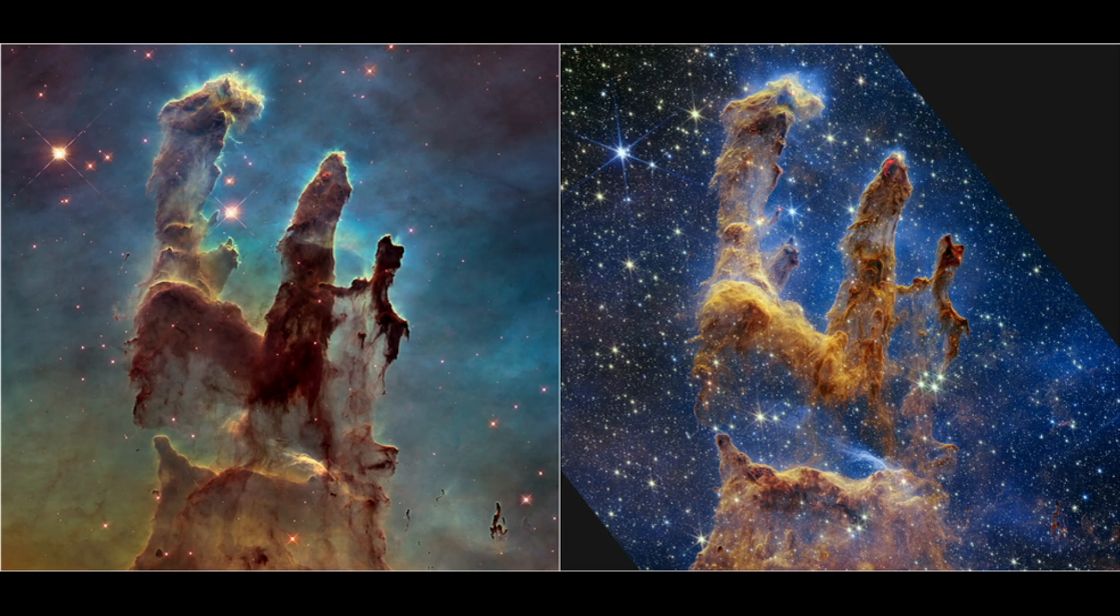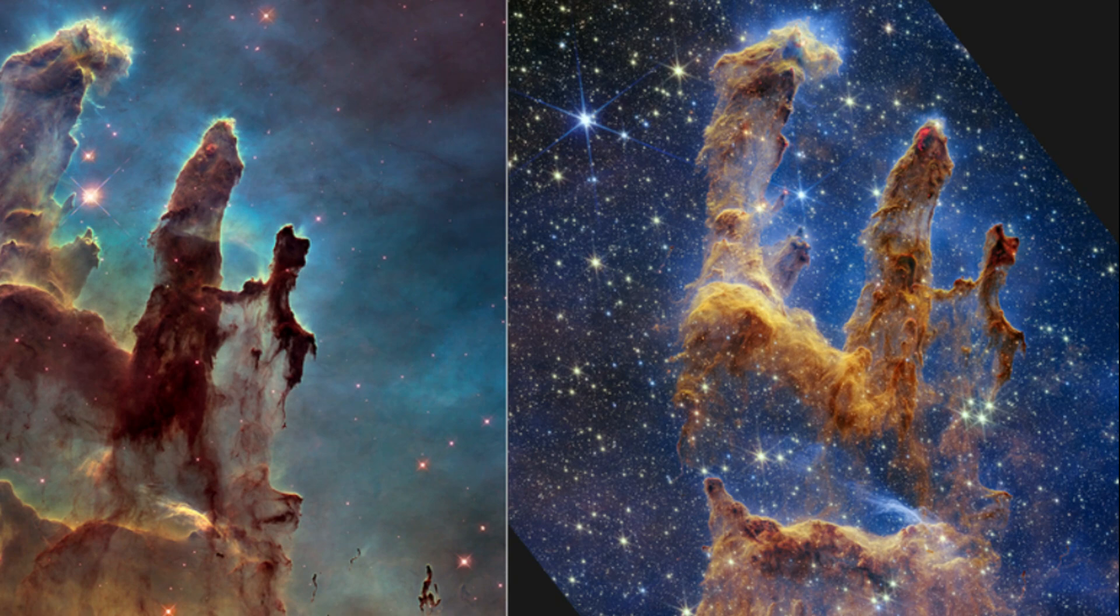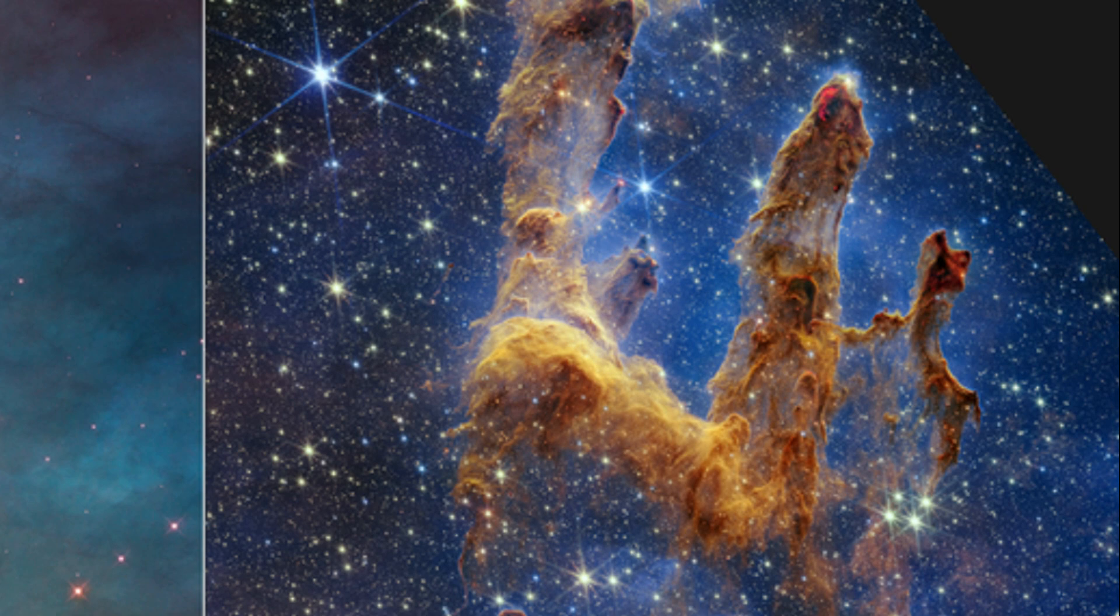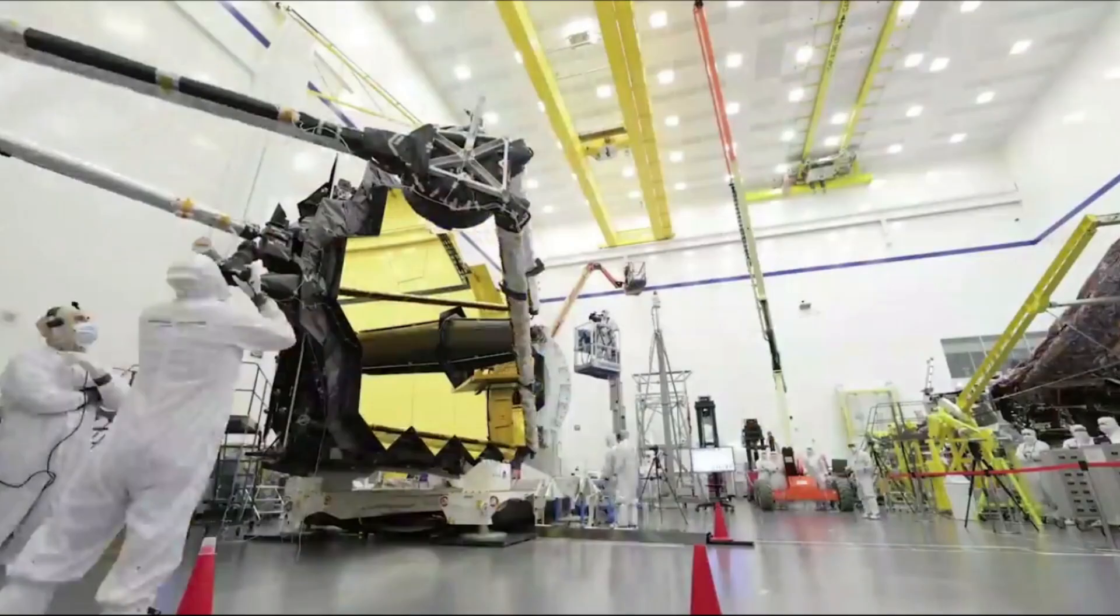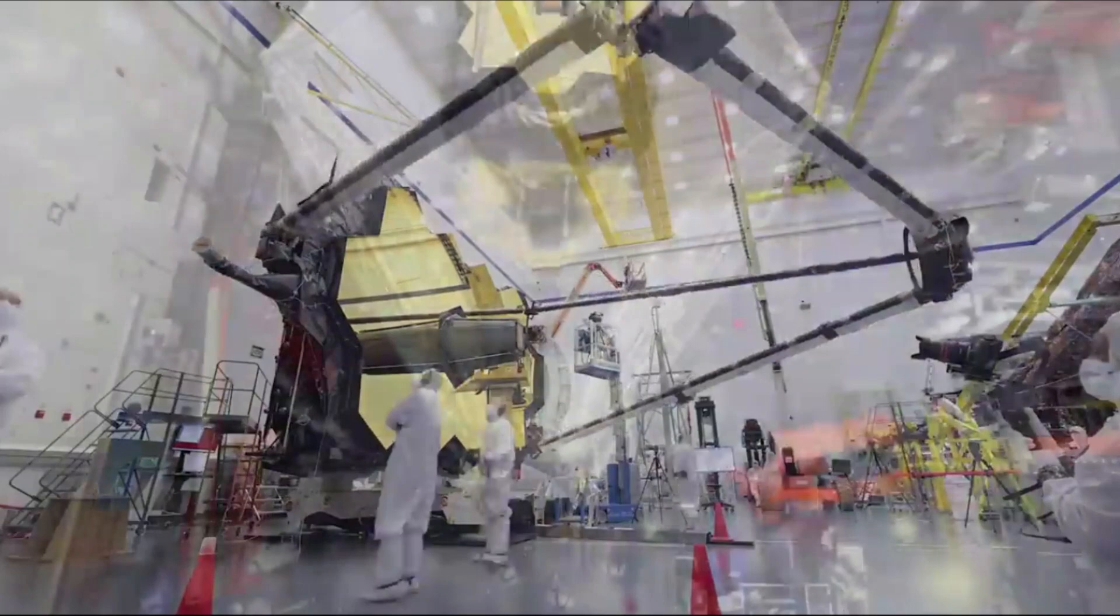In comparison, just earlier this month NASA released more images of the Pillars of Creation using the near-infrared camera. In this case, newly formed stars are the scene stealers in this image. These are the bright red orbs that typically have diffraction spikes and lie outside one of the dusty pillars. When knots with sufficient mass form within the pillars of gas and dust, they begin to collapse under their own gravity, slowly heat up, and eventually form new stars.